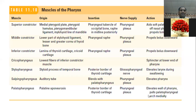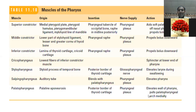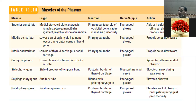Looking at all the muscles, only stylopharyngeus has a different nerve supply; all other nerve supplies are via the pharyngeal plexus. The main role is swallowing, allowing food to travel easily.